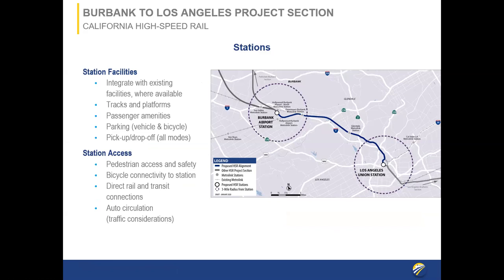Both the Burbank Airport Station and Los Angeles Union Station are intermodal centers. We will integrate with existing facilities where available — meaning tracks and platforms, passenger amenities, vehicle and bicycle parking, and pickup and drop-off for all transportation modes. Pedestrian access and safety is very important at these stations, as well as bicycle connectivity, direct rail and transit connections, access to the airport at Burbank Airport Station, and considerations for auto circulation.